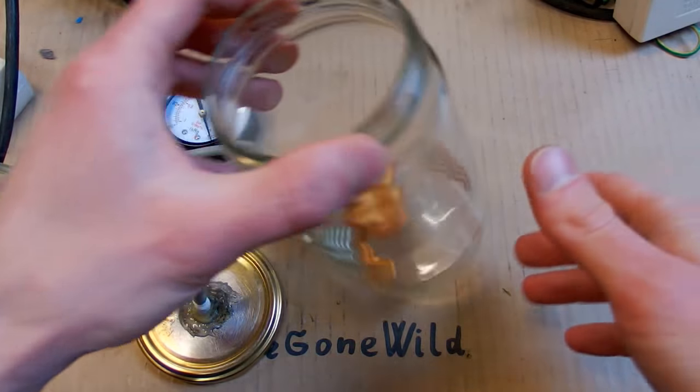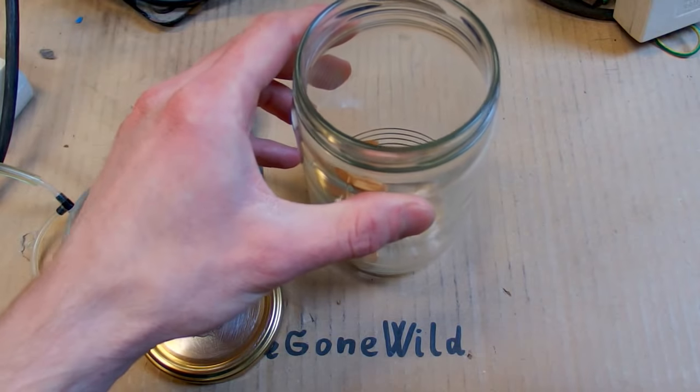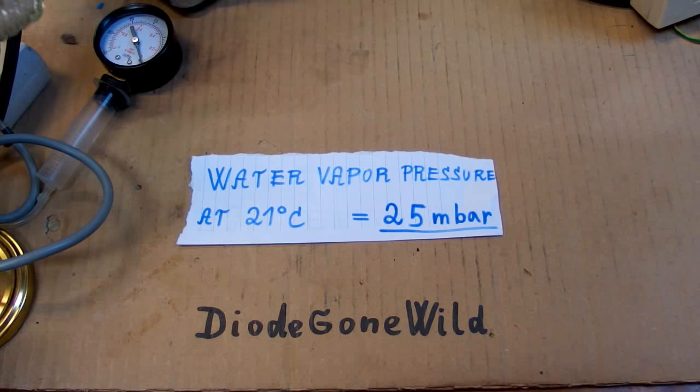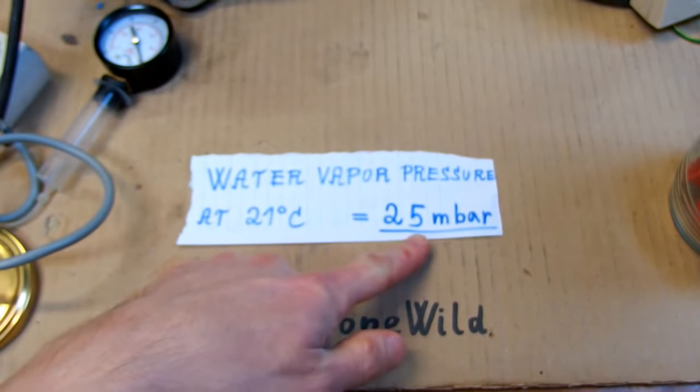The pressure inside will basically be the water vapor pressure at room temperature, which is about 25 millibars. So a jar of properly canned food probably contains a better vacuum than my pump is able to make.